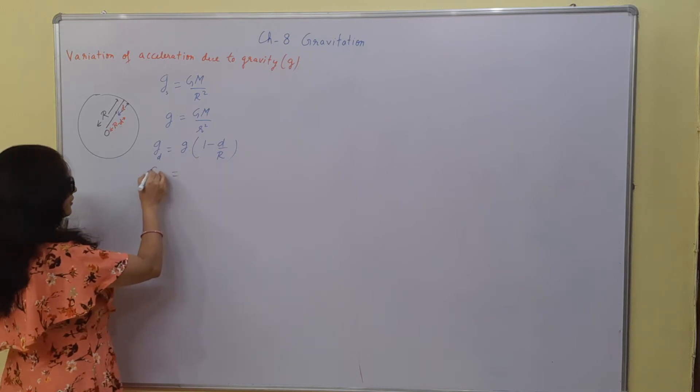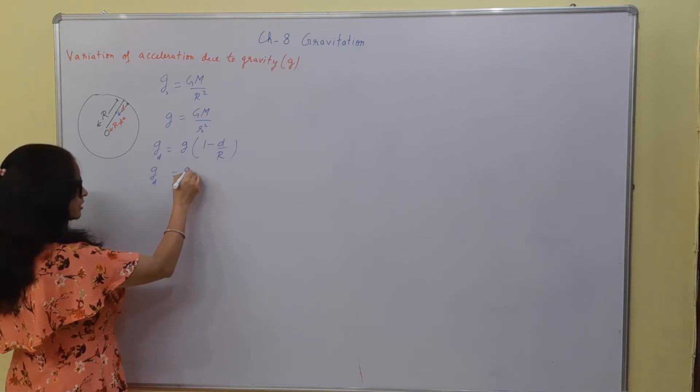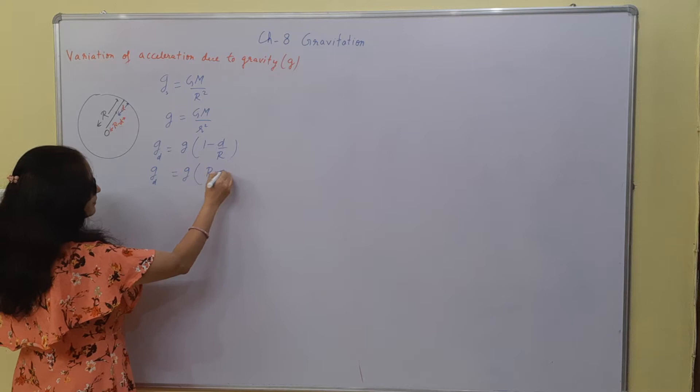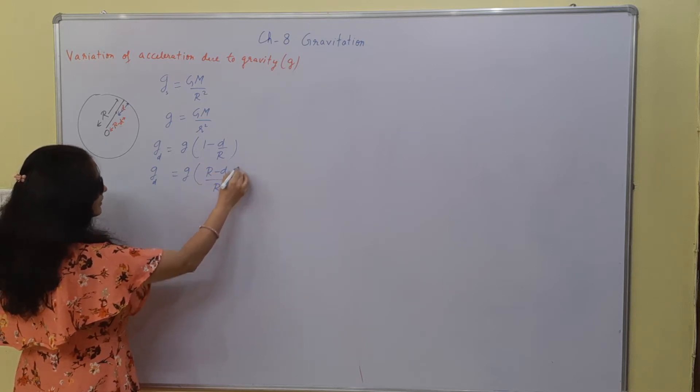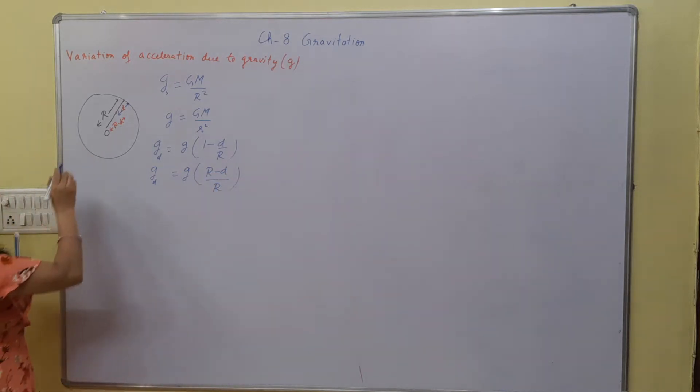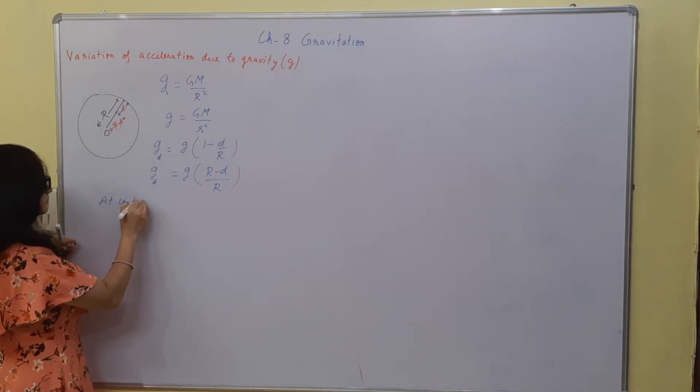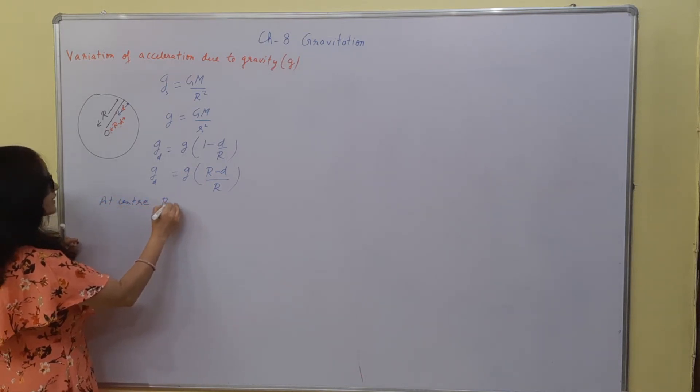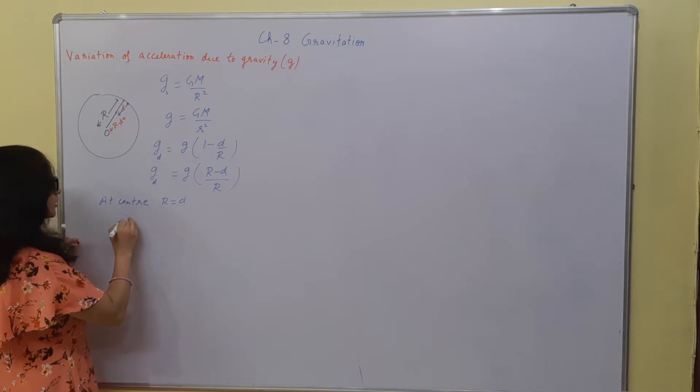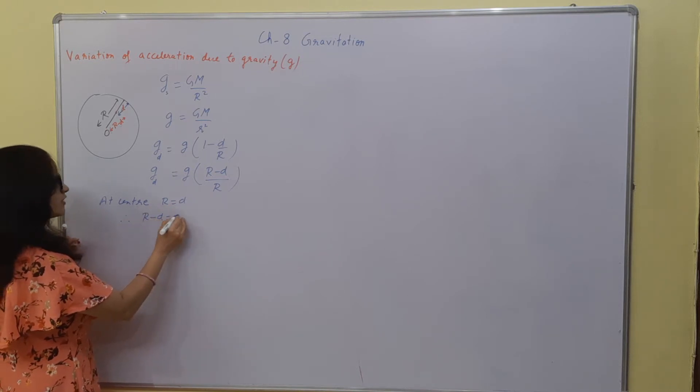Now g at surface I have taken as small g. So this will be r minus d upon r. If you look at this r minus d, at the center r is equal to d.